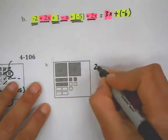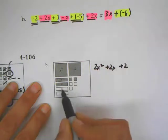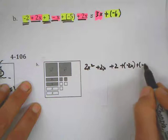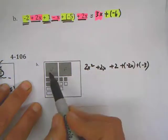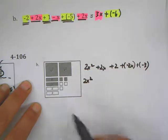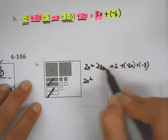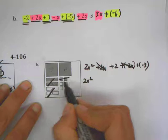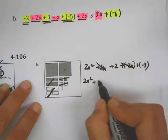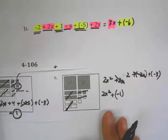For part b, the original expression is: two x squared plus two x plus two plus negative two x plus negative three. There are no other x squared terms, so two x squared stays. A plus two x and a minus two x cancel. The plus two and negative two cancel, leaving two plus negative three as negative one. So the expression simplifies to two x squared plus negative one.